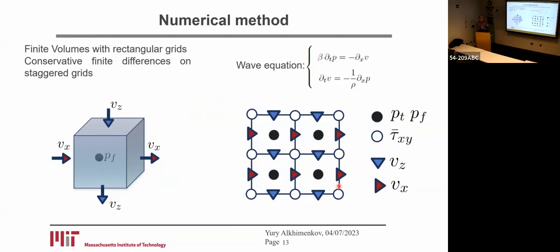Velocities are at the walls or boundaries of our domain, and it makes the scheme conservative. As an example, I'm showing the wave equation — there are two equations for pressure and velocity. In order to solve the wave equation, we need some integration in time and also some spatial derivatives.